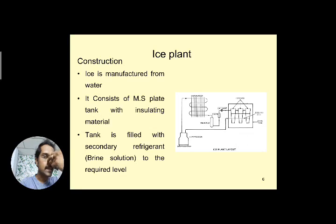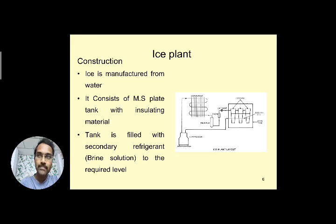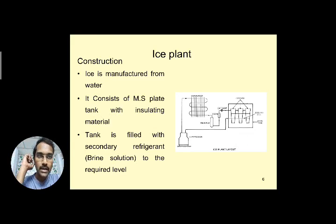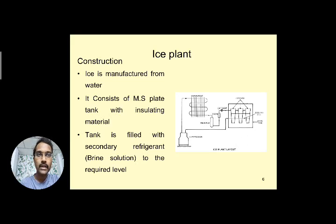There are two types of refrigerant in this system. The primary refrigerant provides the cooling effect and flows inside the pipes and coils — refrigerants like R12 or R22 are used as primary refrigerants. The secondary refrigerant is present inside the brine tank — that is the brine solution — filled up to the level of the cans or just below them.